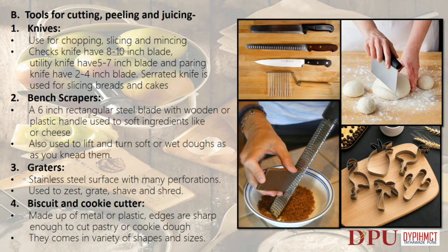Tools for cutting, peeling and juicing — Knives: used for chopping, slicing and mincing. A chef's knife has an 8–10 inch blade, a utility knife has a 5–7 inch blade, and a paring knife has a 2–4 inch blade. A serrated knife is used for slicing breads and cakes. Bench scrapers: a 6-inch rectangular steel blade with wooden or plastic handle, used to cut soft ingredients like cheese and also to lift and turn soft or wet doughs.